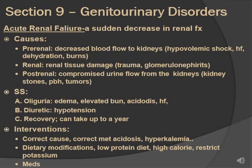Interventions for acute renal failure: correct the cause first. Correct metabolic acidosis, hyperkalemia, hyperphosphatemia, and hypocalcemia — restore the electrolytes. Dietary modifications: low protein, high calorie, restricted potassium. Medications like phosphate binders to lower phosphorus, or erythropoietin to treat anemia, depending on what they have.